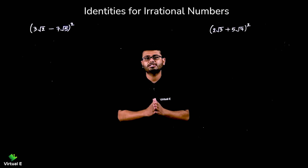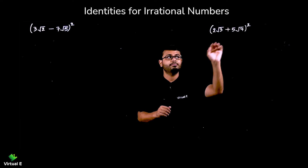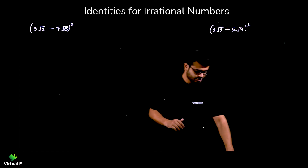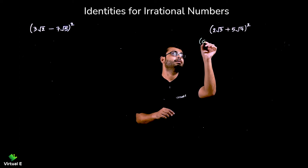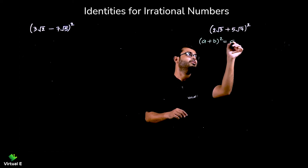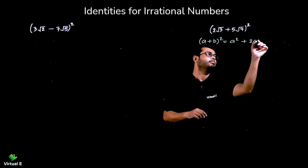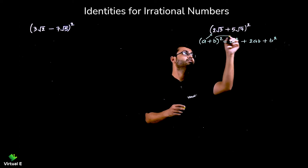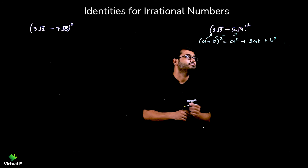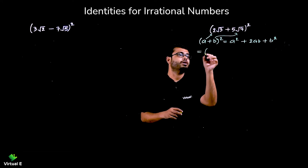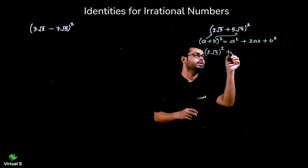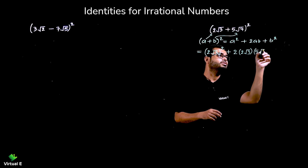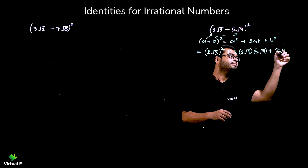Let's discuss two more questions related to the previous concept. Here we have (2√3 + 5√7) whole square. Previously we had only terms like √3 or 2 and √3. So applying (a + b)² = a² + 2ab + b², where a = 2√3 and b = 5√7: we get (2√3)² + 2·(2√3)·(5√7) + (5√7)².